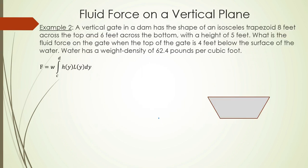We have a vertical gate in a dam that has the shape of an isosceles trapezoid, eight feet across the top and six feet across the bottom, with a height of five feet. The top of the gate is four feet below the surface of the water. Water has a weight density of 62.4 pounds per cubic foot. We know our weight density, but we have some work to do. I already have a picture of a trapezoid on screen, and now we're going to orient it on a coordinate plane.